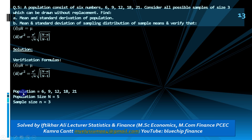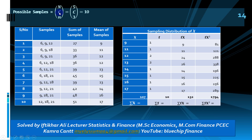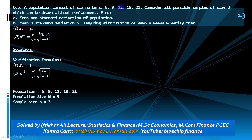Population is {6, 9, 12, 18, 21}, so uppercase N = 5; sample size n = 3. For without replacement, all possible samples are obtained through the combination method: C(5,3) = 10 possible samples. The samples are: (6,9,12), (6,9,18), (6,9,21), (6,12,18), (6,12,21), and so on.